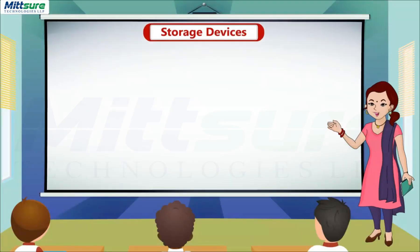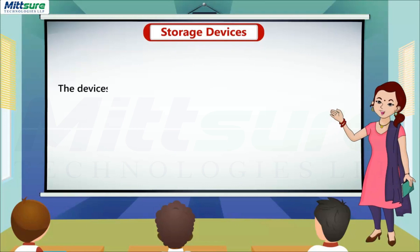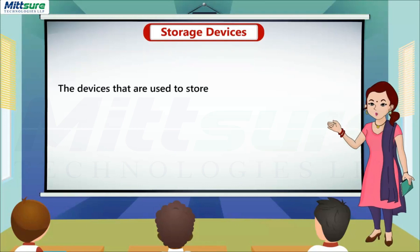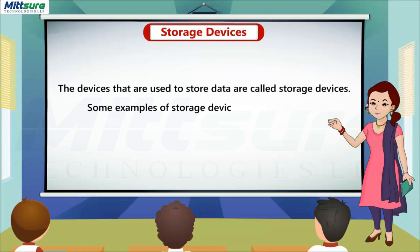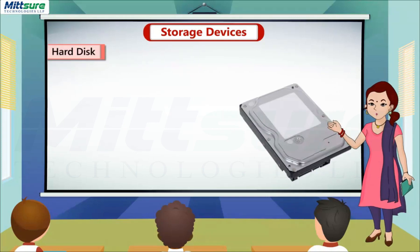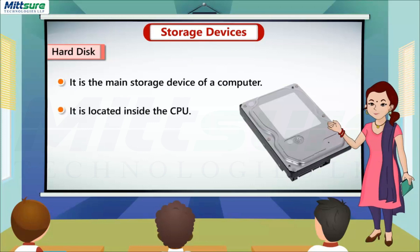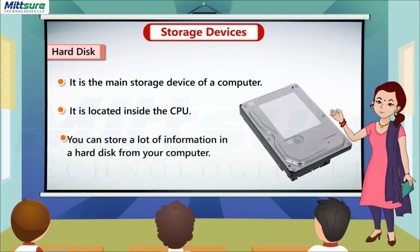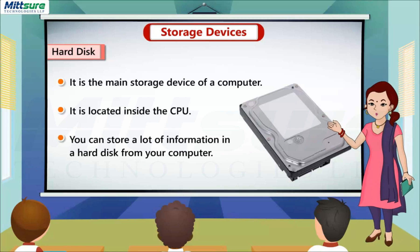Storage Devices: the devices that are used to store data are called storage devices. Some examples are given below. Hard disk: it is the main storage device of a computer. It is located inside the CPU. You can store a lot of information in a hard disk.